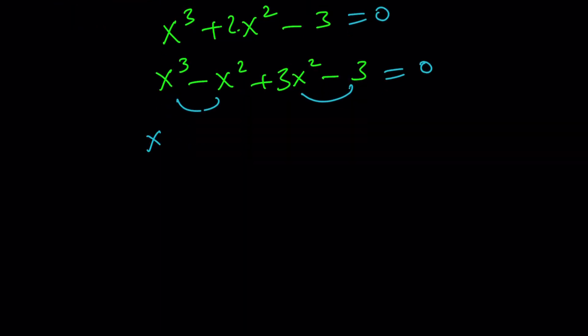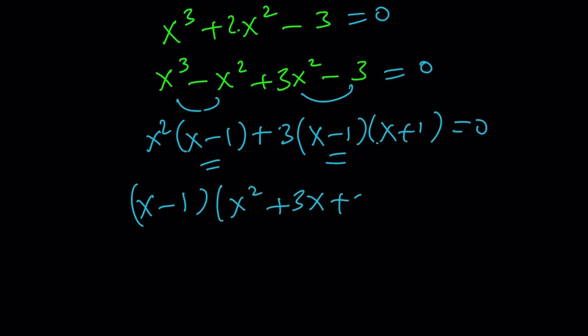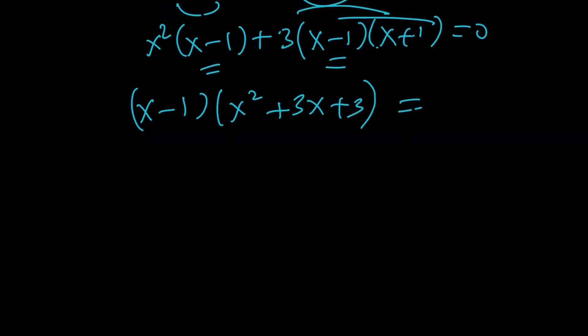And now you can go ahead and take out x squared times x minus 1, and then 3 times x squared minus 1, which is x minus 1 times x plus 1 from difference of 2 squares. And then if you take out the x minus 1, you're going to get x squared plus 3x plus 3, because you're supposed to distribute the 3 here. And then this is going to be it.